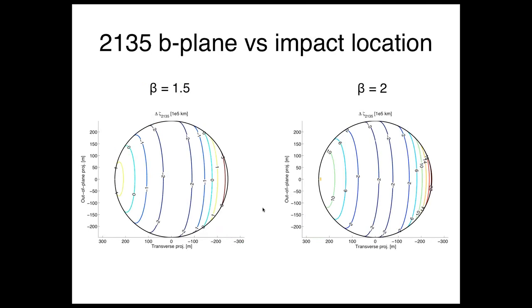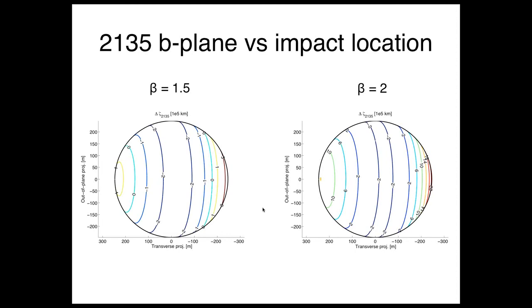Now, this delta V affects where we arrive in 2135. So we can plot the change in position in 2135 versus the impact location on the asteroid. Here is for beta 1.5, which is a fairly small value of beta. You can see we can move it by up to a couple hundred thousand kilometers, which is a couple of sigma at the current uncertainties.